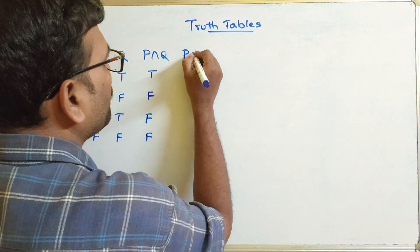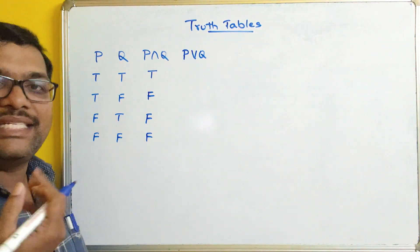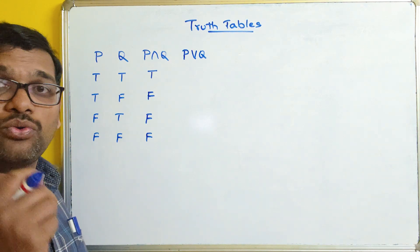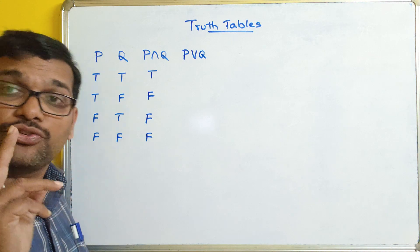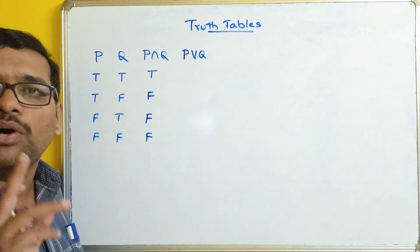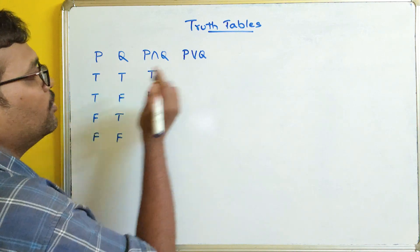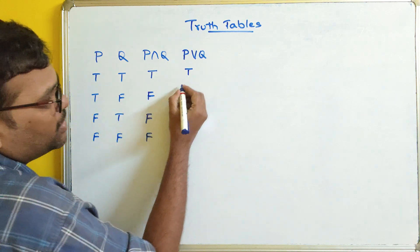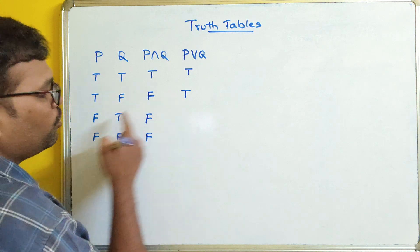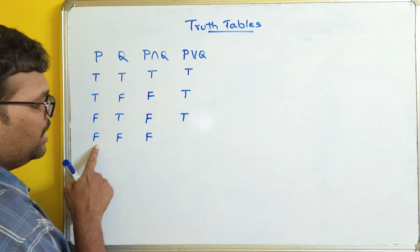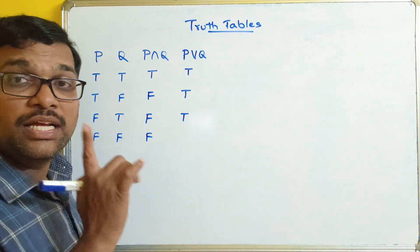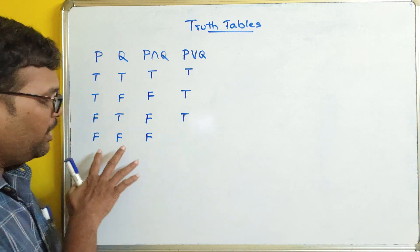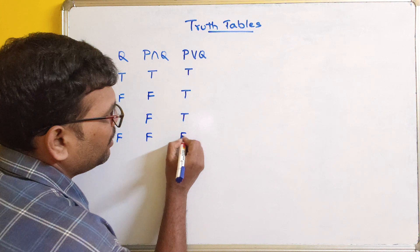Next, disjunction. Disjunction is quite opposite to conjunction — if the truth value of any one proposition is true, then the result will be true. So: true and true gives true; true and false — one is true — gives true; false and true — one is true — gives true; false and false — both are false — gives false.